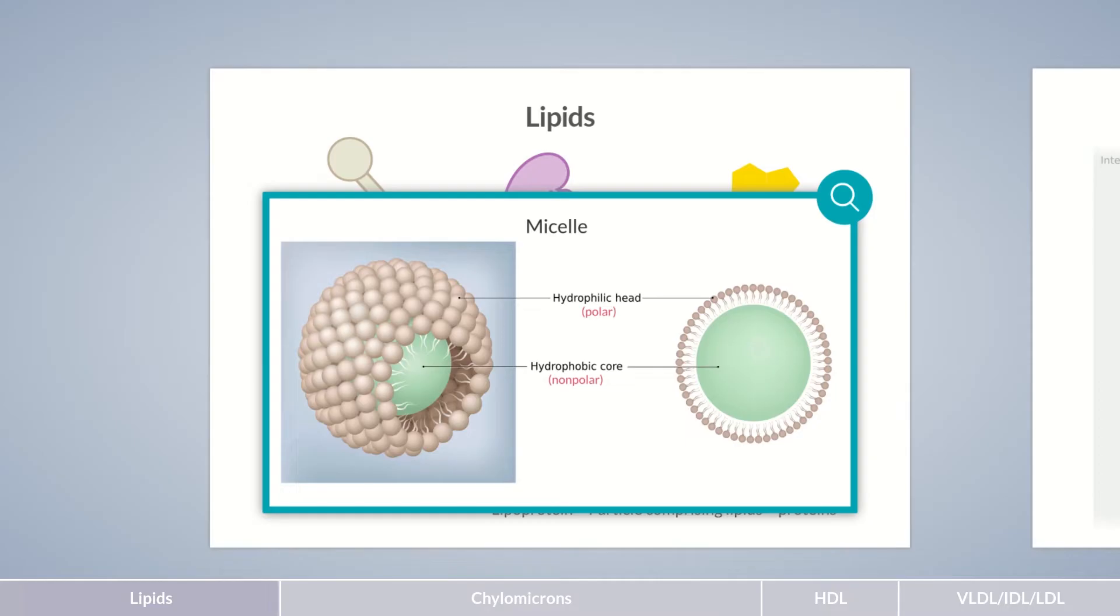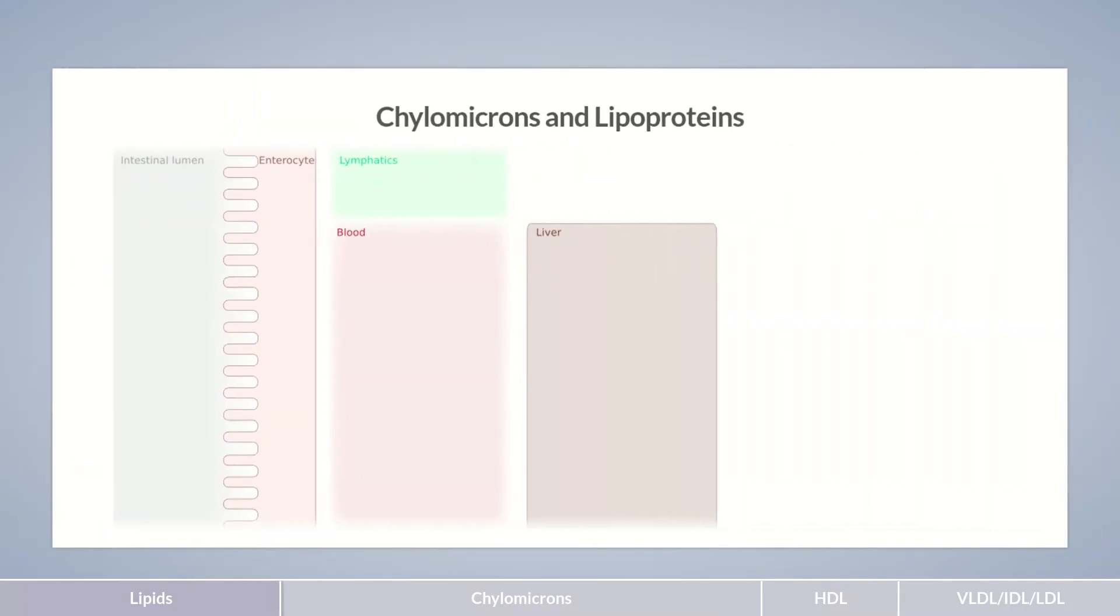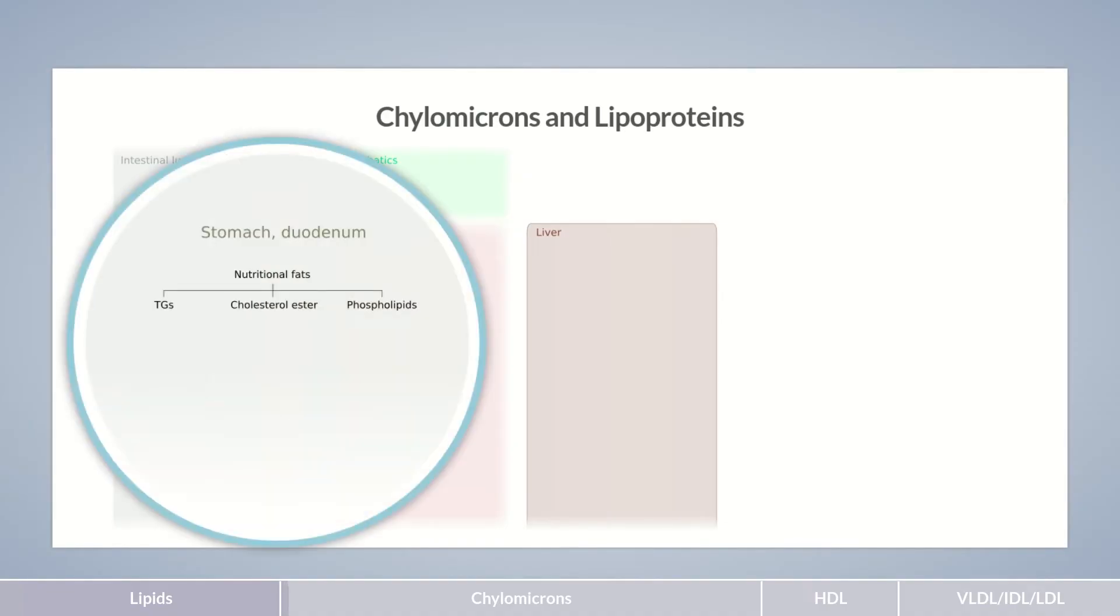This is also what happens to hydrophobic food components. Now, let's delve into dietary fat absorption. Fatty acid esters from food are enzymatically cleaved in the stomach and duodenum by lipases and esterases. This process is called lipolysis.